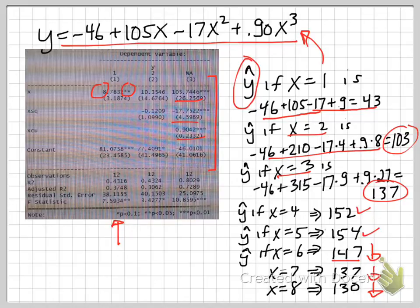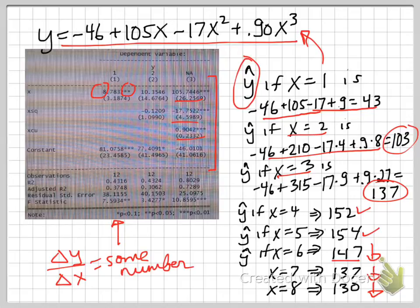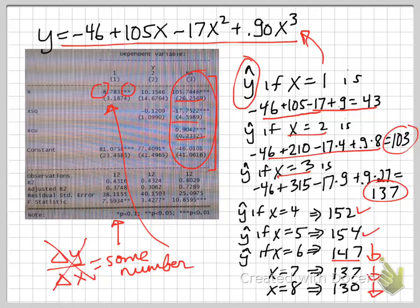So the upshot of this is that where we normally think of a change in y over a change in x equal to some number, and that's the linear case, we have some number here, and that's the effect of x on y. When we have a nonlinear function, a polynomial function like here, there's no longer a single delta x over delta y.